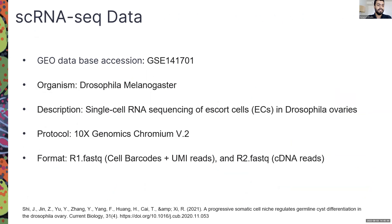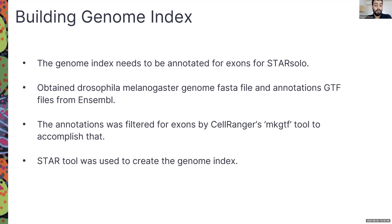To test this pipeline, we obtained single-cell RNA-seq data for stem cells in Drosophila ovaries from the GEO database. We then built the genome index using STAR, which requires annotation of exons. The annotation files need to be filtered beforehand to remove splice junctions. However, we still need the annotation file because STARsolo produces a count matrix that includes gene features, so the annotations are essential.